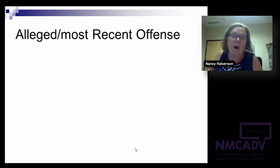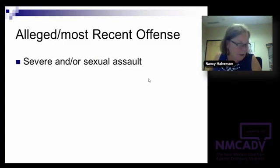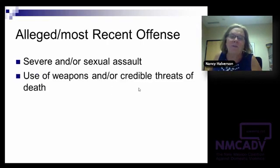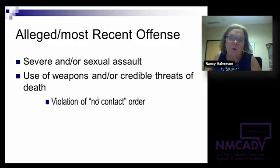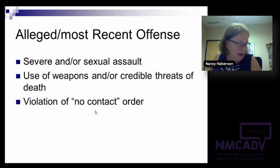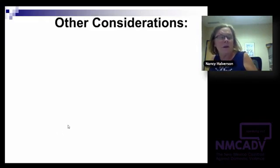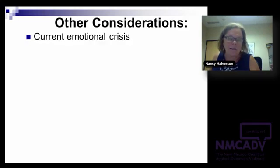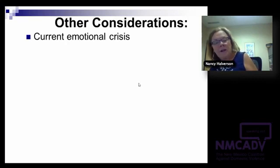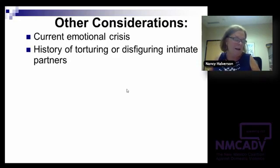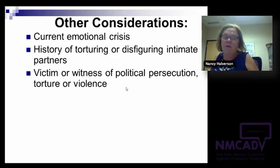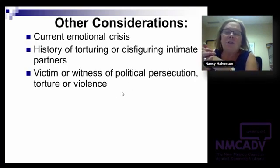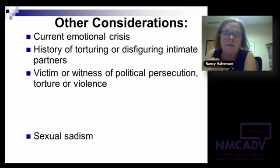The SARA also offers a chance to look at additional considerations — sometimes really important. These include: whether there's a current emotional crisis, such as the perpetrator losing a parent or job; whether there's a history of torture or disfiguring; sadism; easy access to firearms and stalking; and recent loss of social support network. We also have many political prisoners and refugees in Minnesota from war-torn countries, and that may be a piece worth paying attention to. Any of these can be coded and included in the SARA, or deemed critical even if they can't be coded.